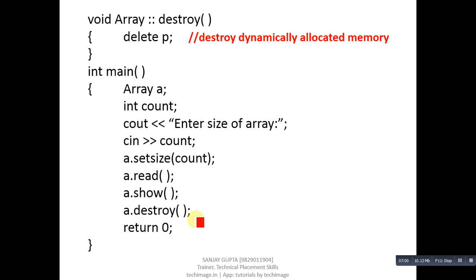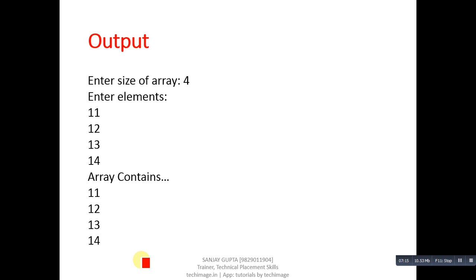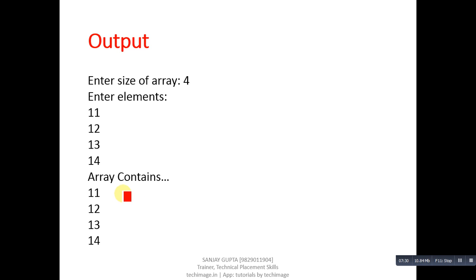This is the simple implementation of dynamic memory allocation and deallocation — new for allocation and delete for deallocation. Looking at the program output: size of array is 4, input values are 11, 12, 13, 14, and the output displays the same values: 11, 12, 13, 14.